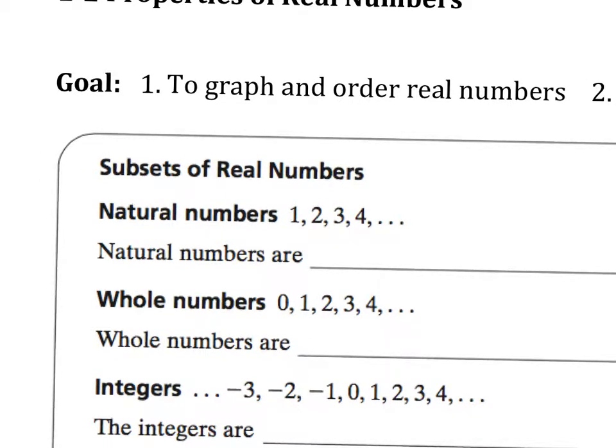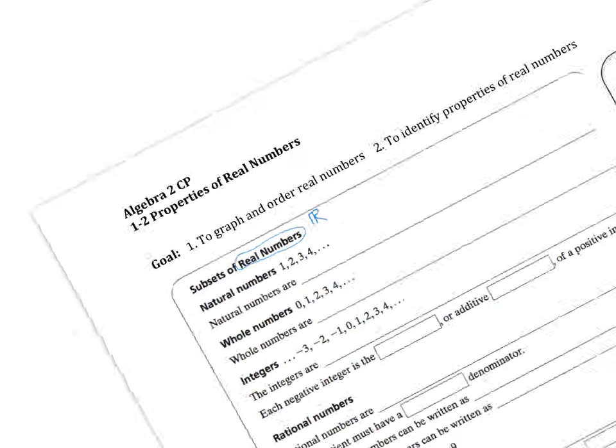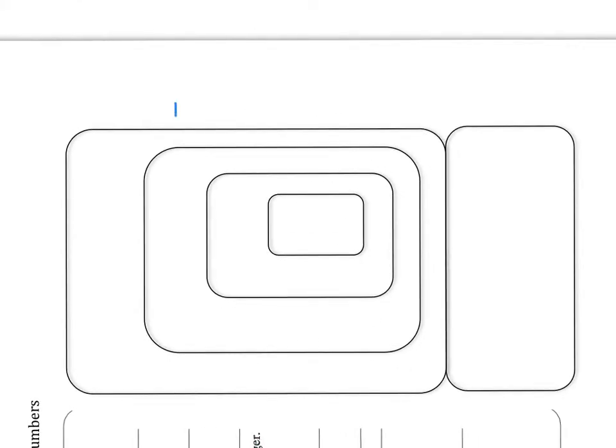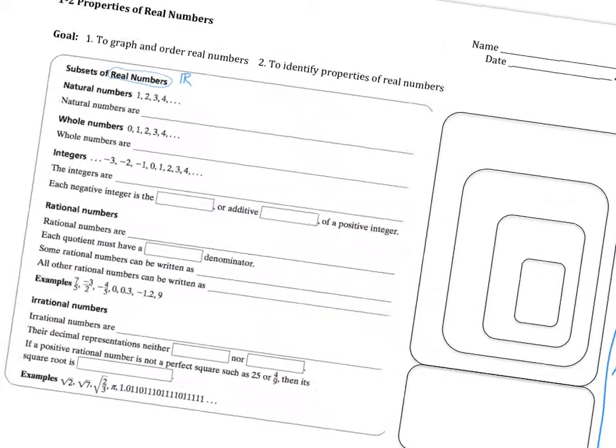So we are going to look at real numbers. The first thing is that instead of writing out the words real numbers, we can actually use a symbol. The symbol is kind of like an R with an extra leg. An R with an extra leg for real numbers. So I'm going to rotate my paper here and show you over here that this entire, all the boxes here that we are dealing with are my real numbers. And we'll break down the individual components, what each one of these subsets are.